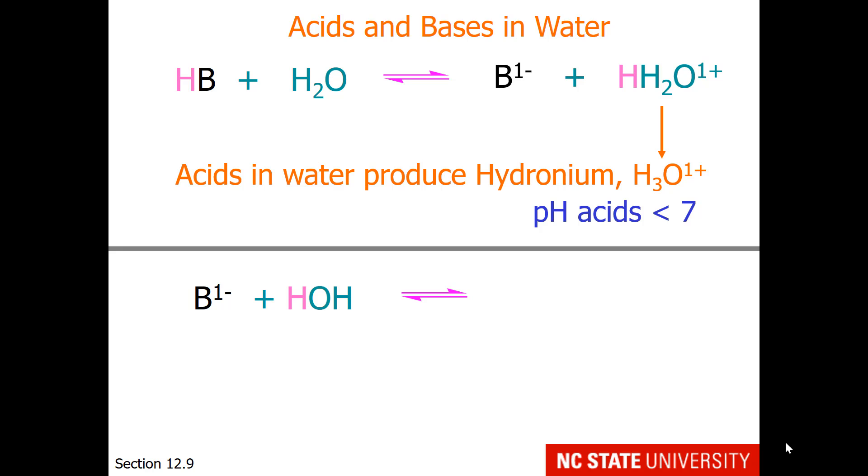When bases react with water, they take the proton, leaving behind hydroxide. So when you have hydroxide in solution, the pH is greater than 7.